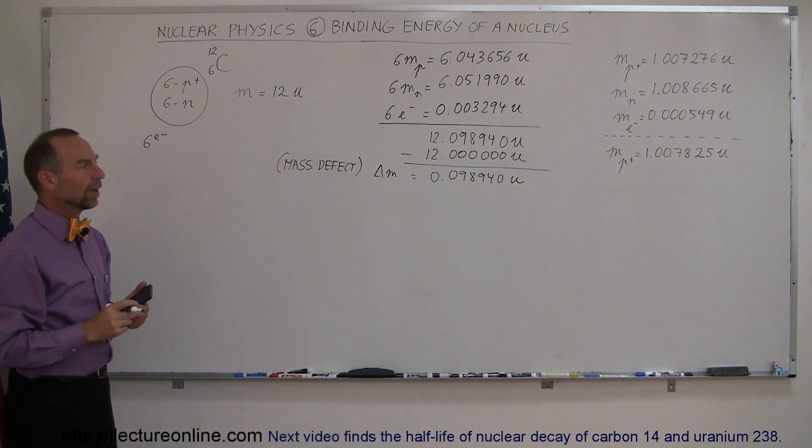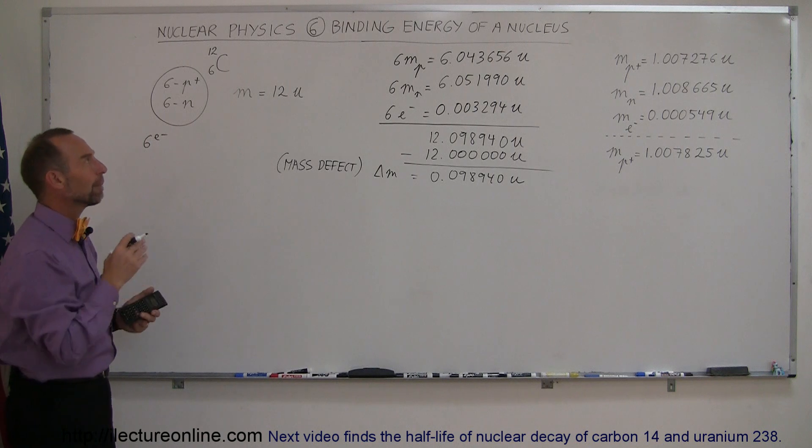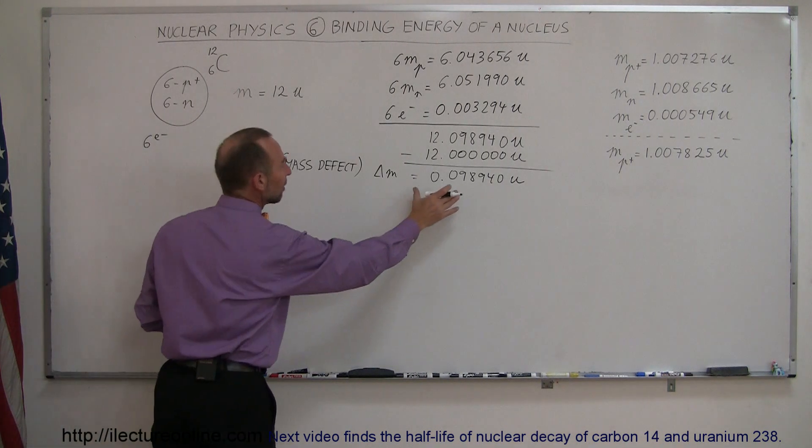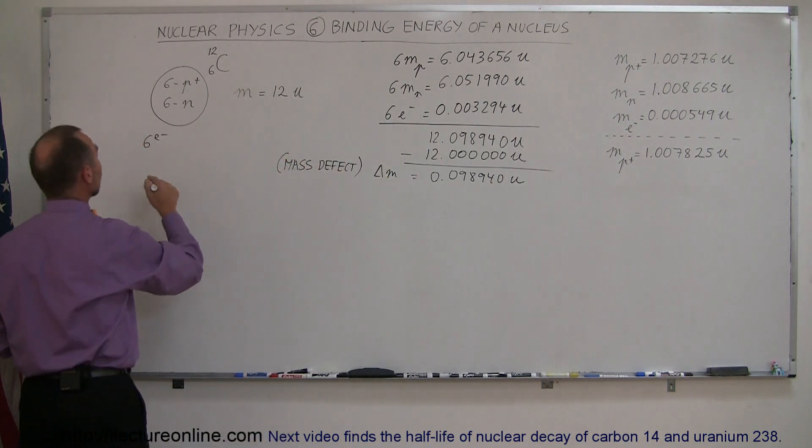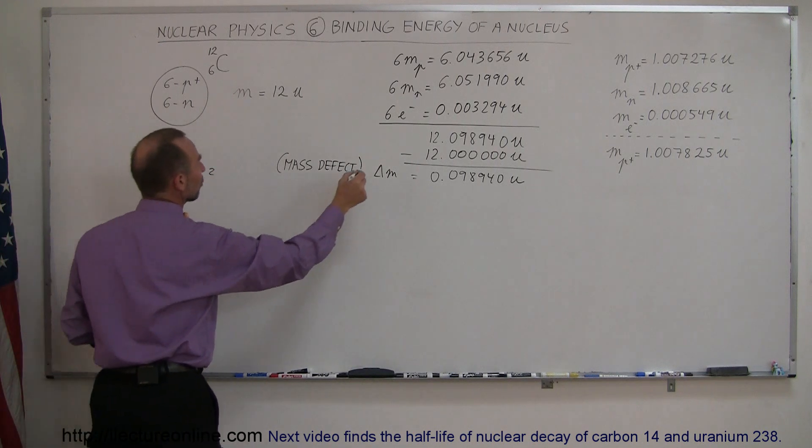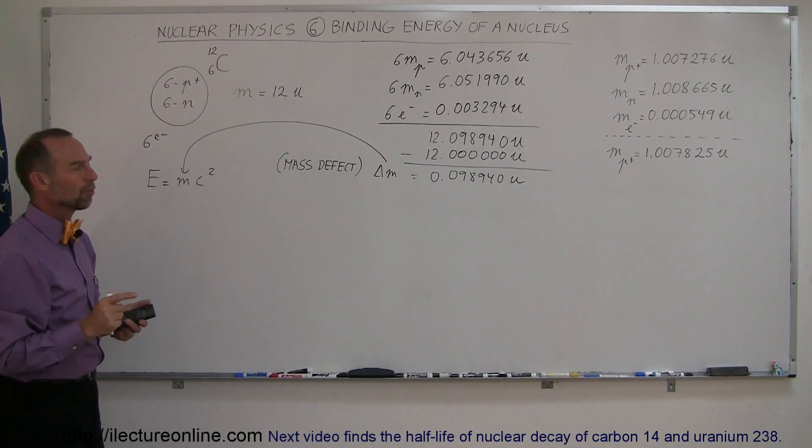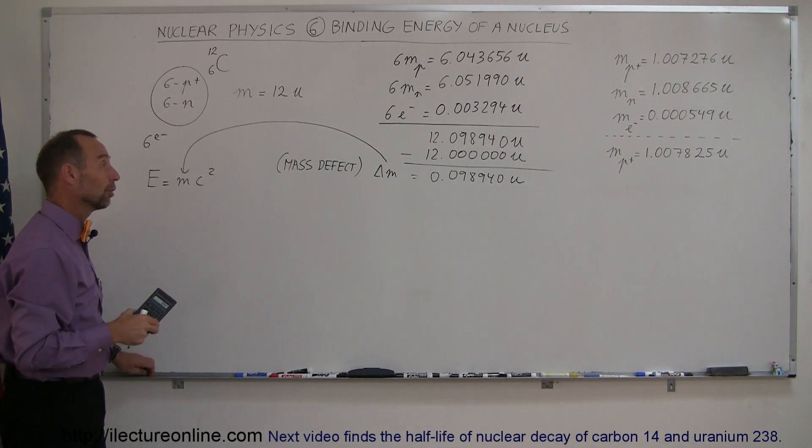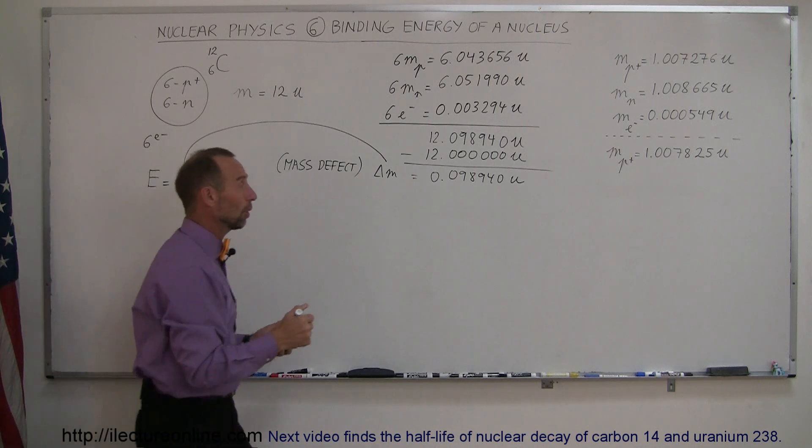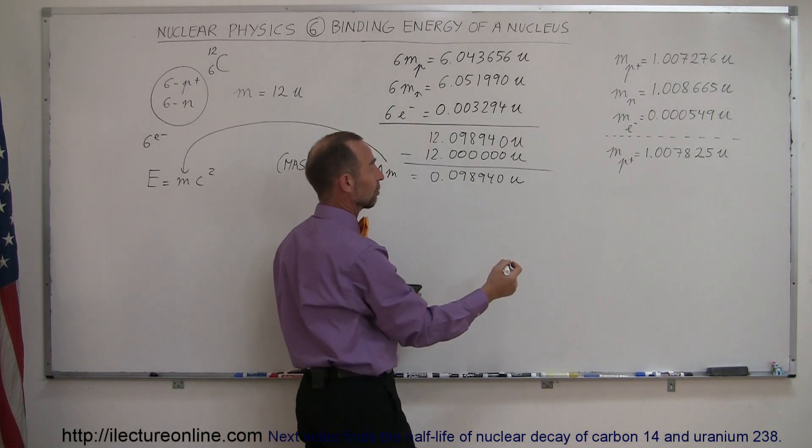So what is the equivalent energy of that? The binding energy is taking this mass and converting it to energy using the equation E equals mc squared, which means we have to take this mass and plug it in here in Einstein's equation. But before we do that, we have to convert that to kilograms.